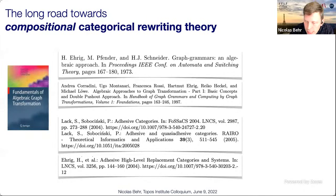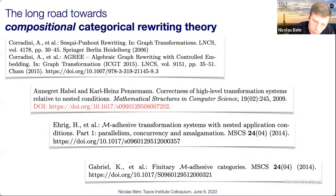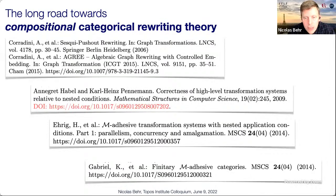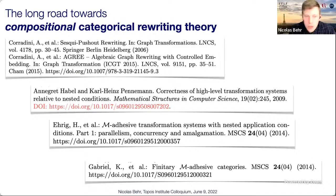Around 25 years ago, with some minor modifications and weakenings done by Ehrig and his school, there was an understanding that this field was pretty much finished — you had adhesive category theory and variants, plus DPO double pushout semantics, and that seemed to be the pinnacle. Then there were some very important developments, including work of Habel and Pennemann showing how to endow these semantics with constraints on objects.